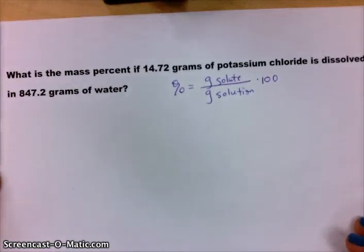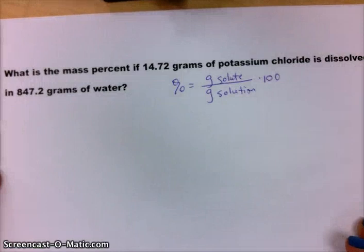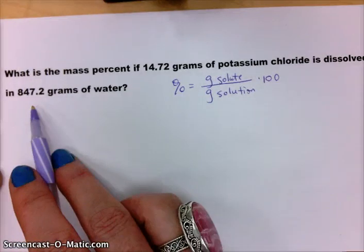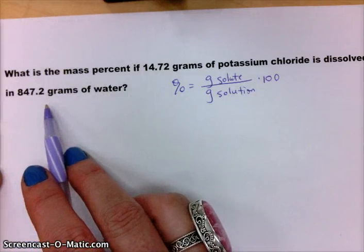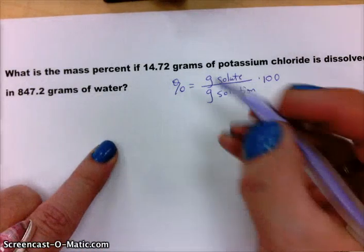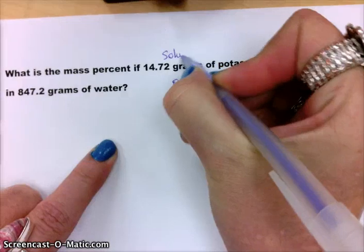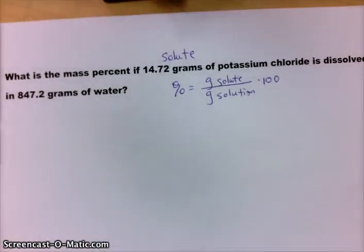So let's identify the numbers we have: 14.72 grams and 847.2 grams. Which one is the smaller amount? Yes, the 14.72 grams is smaller. The smaller grams is our solute. Our solute is always the chemical we have less of.